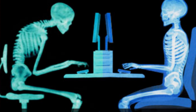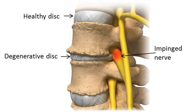Anytime we have forward head posture — and you know me, forward head posture is something I always talk about — that is causing weakening of the ligaments, pressure on the joints, and allowing more instability. Looking at a healthier disc versus a degenerative disc, obviously when that disc degenerates there is going to be involvement of the joints. You can see the impinged nerve right there — as that disc gets thinner, that nerve becomes more involved.